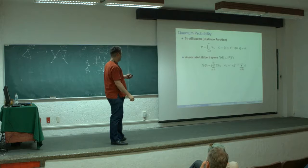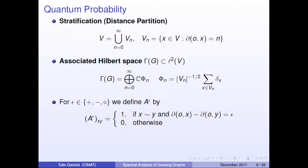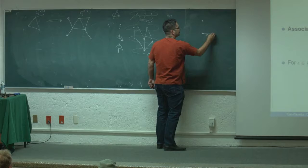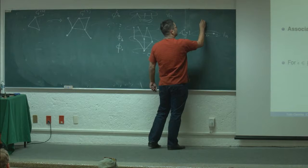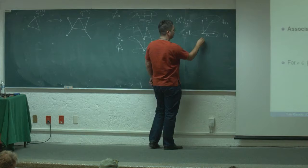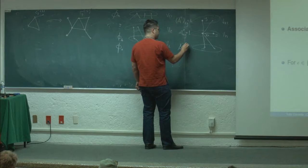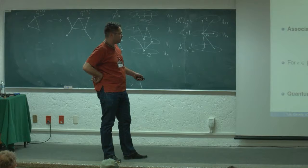We define the so-called creation and annihilation operators. For example, if x is a vertex: if y is in the same level as x, we have a contribution to the diagonal operator; if y is in the next level Vn+1, then A+ applied to x gives y; and if y is in the previous level Vn-1, then A- applied to x gives y. With this definition we have a decomposition of the adjacency algebra given by the sum of these matrices.